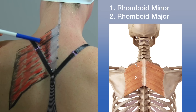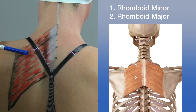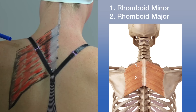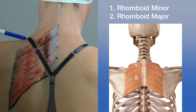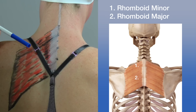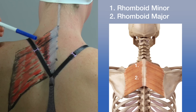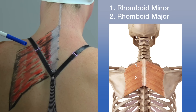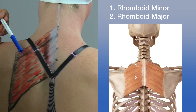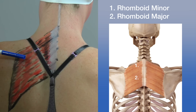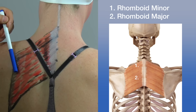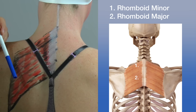The rhomboid minor originates at the nuchal ligament and also attaches to the spinous processes of C7 and T1, inserting along the vertebral border of the scapula and the root of the spine of the scapula. The rhomboid major originates along the spinous processes of T2 through T5 and off the supraspinous ligament, inserting along the vertebral border of the scapula from the root of the spine of the scapula to its inferior angle.